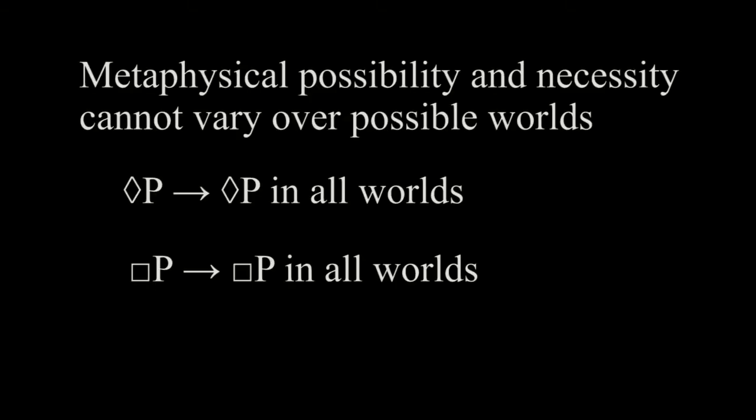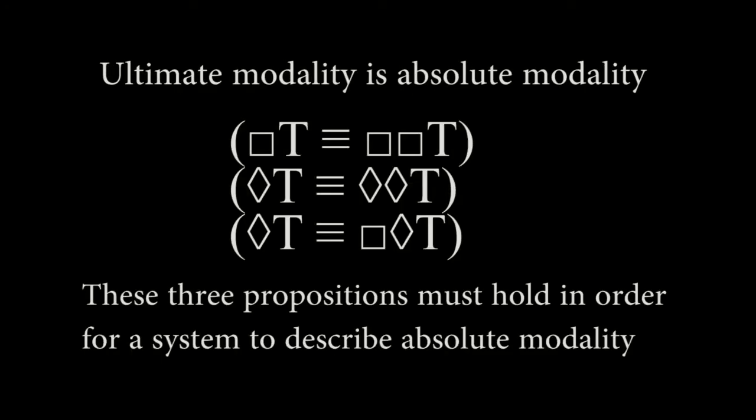This means that when we have to pick a system of modal logic, it must account for this — it must be able to derive this formula in order to accurately represent metaphysical possibility and necessity. When we are dealing with metaphysical possibility and necessity, we are dealing with ultimate possibility and necessity — possibility and necessity that does not vary over different possible worlds. There has to be at least one truth that holds for absolutely all possible worlds with no exceptions. And if there weren't, then the statement 'there is no truth that holds for all possible worlds' would itself hold for all possible worlds. So we know there is at least one truth with this ultimate necessity. Hence, 'necessarily T' and 'necessarily necessarily T' have to mean the same thing — if they didn't, the term 'necessarily' isn't talking about ultimate necessity.